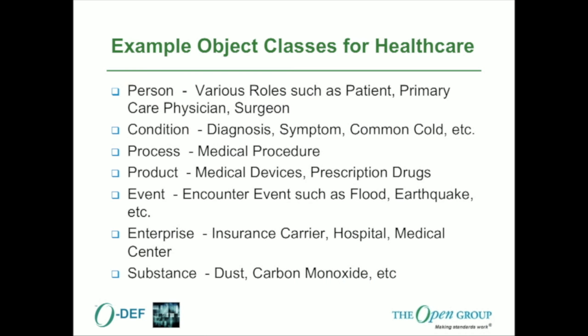Within the healthcare industry, there are object classes such as various roles of persons; a condition class where you'd find things like diagnosis and symptoms; processes for medical procedures; product for medical devices and drugs that might be prescribed; events relevant to the medical situation such as a flood or earthquake — in other words, what happened that caused the problem; enterprises such as insurance carriers and hospitals; and substances relevant to healthcare like dust or carbon monoxide. Those are the fundamental object classes that could all have plug-ins associated with them to deal with the healthcare industry.